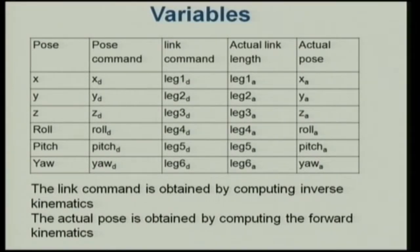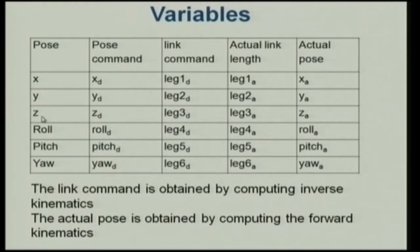We have the platform of the manipulator and we always talk about something called the pose of an object in 3D. You would have the x, y, z coordinates which describe the position, and then you would describe orientation using roll, pitch, and yaw angles.